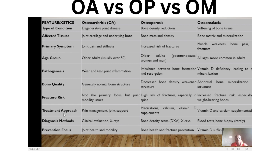For the treatment approach: in osteoarthritis, we manage the pain and provide joint support. In osteoporosis, where we have reduced bone density, we use medications and calcium and vitamin D supplements. In osteomalacia, because it results from vitamin D deficiency, we provide vitamin D and calcium supplements.